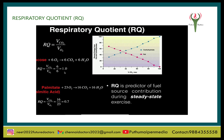The respiratory quotient (RQ) is the ratio of the volume of carbon dioxide evolved to the volume of oxygen consumed in respiration. It is also known as the respiratory ratio: RQ = volume of CO₂ evolved ÷ volume of O₂ consumed. The respiratory quotient varies with the respiratory substrate used and can be calculated for carbohydrates, fats, and proteins.